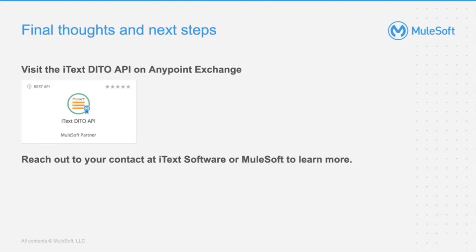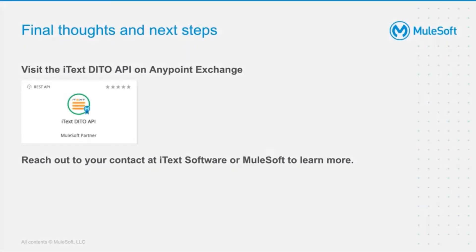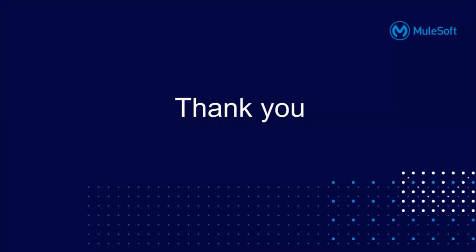Thank you, Shree and Brian, for the insight and the demo. You can visit the AnyPoint Exchange right now and access the iText Deto API that is live — download it to explore many other use cases in addition to the one just walked through. If you have any questions or would like more information, please reach out to your contacts at iText Software or the MuleSoft team to discuss how iText and MuleSoft can fulfill your document generation needs across the enterprise. Thank you for your time and we hope to hear from you soon.